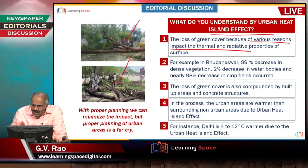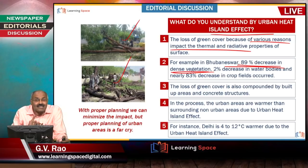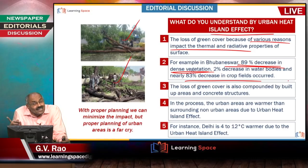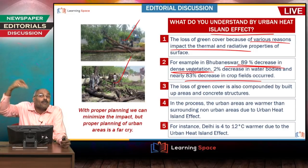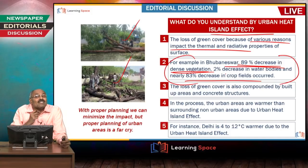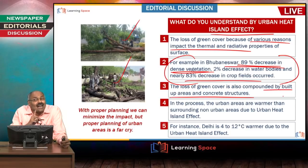In Bhuvaneshwar, there has been an 89% decrease in dense vegetation during the past 15 years, and an 83% decrease in crop fields. Because of urbanization, these crop fields were converted into urban areas. More than 80% decrease in dense vegetation occurred. Loss of green cover is one aspect, and it is compounded by built-up areas and concrete structures.